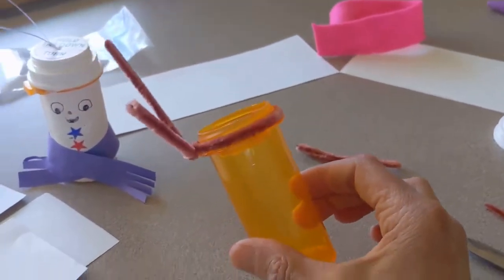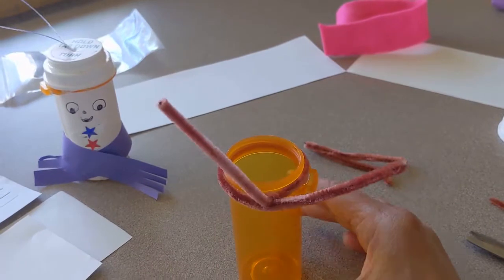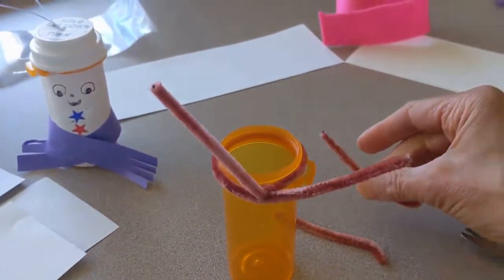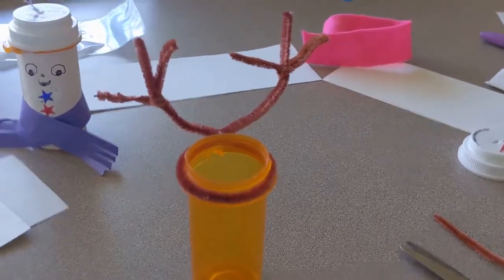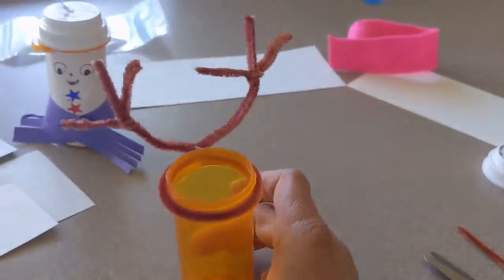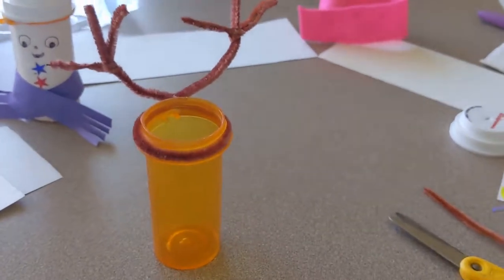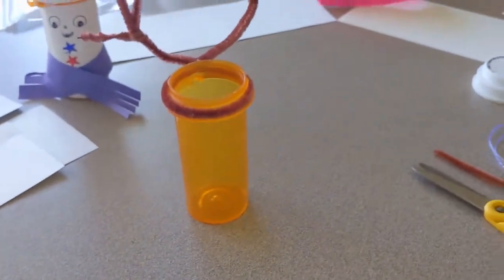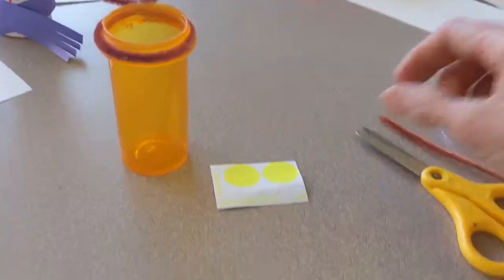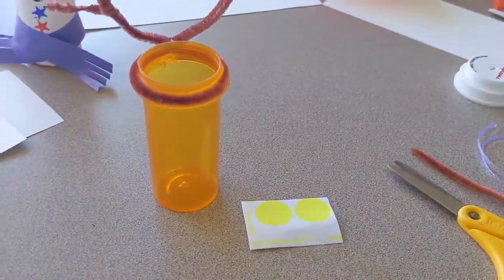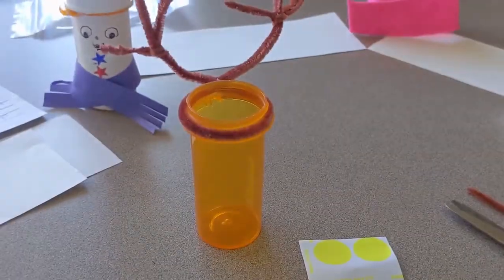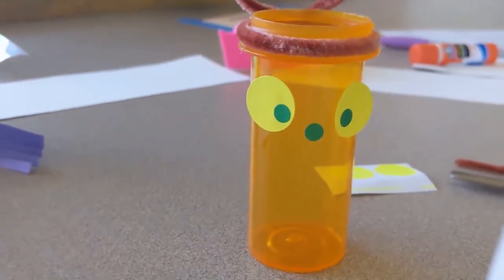I twisted the pipe cleaner all the way around the bottle. Now I'm going to put my little half pieces on. The half pieces were twisted around and now I have something that kind of looks like antlers. Then all I need to do is the stickers. I like these stickers because they're kind of wild and crazy.